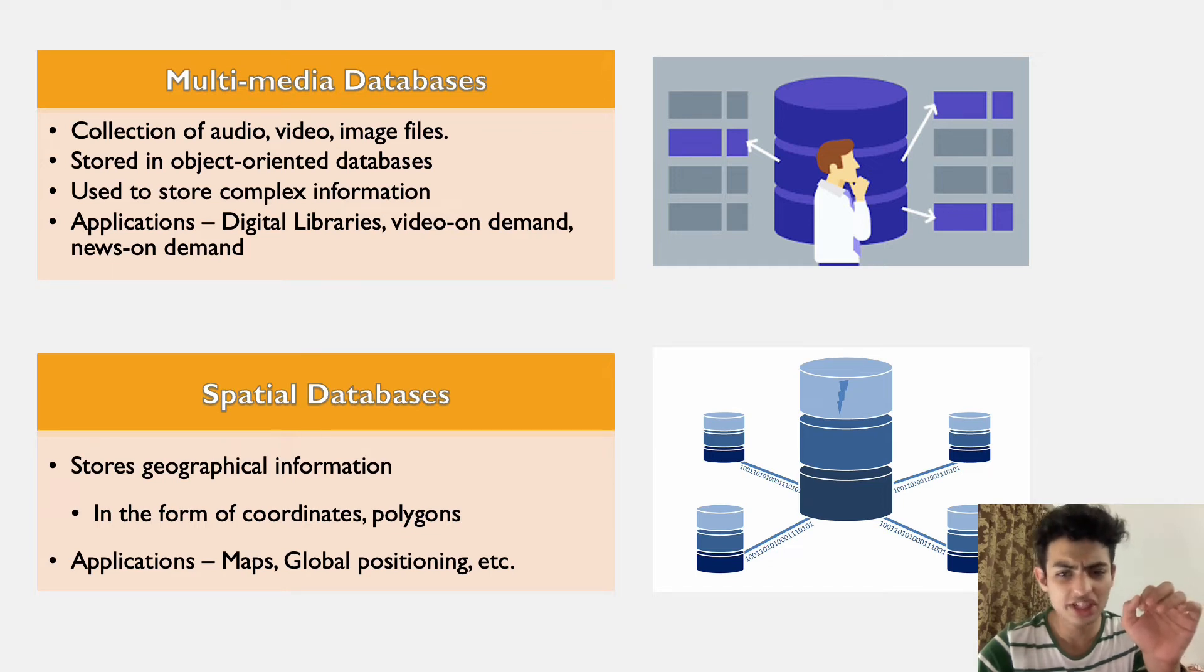The last one is spatial database. So spatial databases are built to store and provide powerful query capabilities for spatial data. So spatial data is often much larger in size than traditional data because of its additional locational component. This locational component is generally in the form of polygons or coordinate points like Google Maps and global positioning of things or even satellite tracking uses spatial databases.